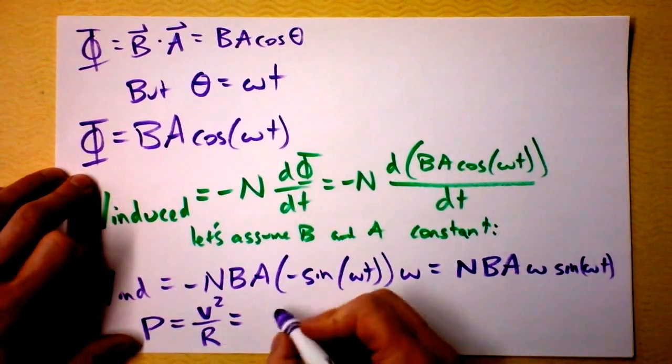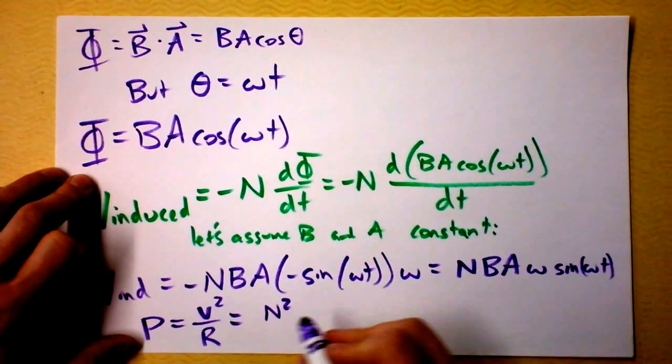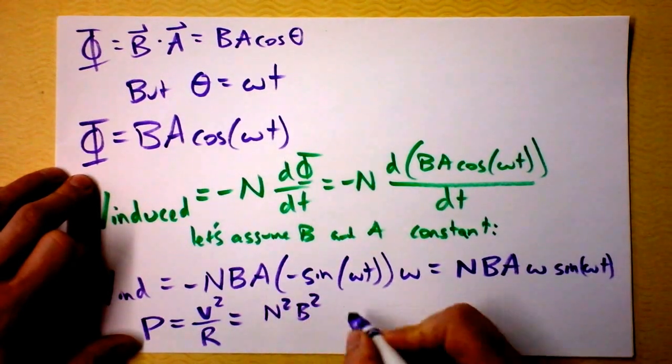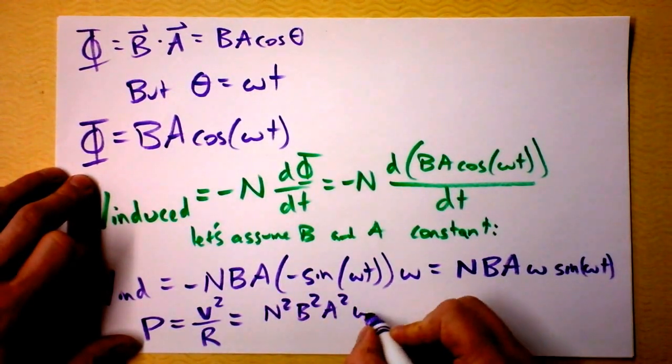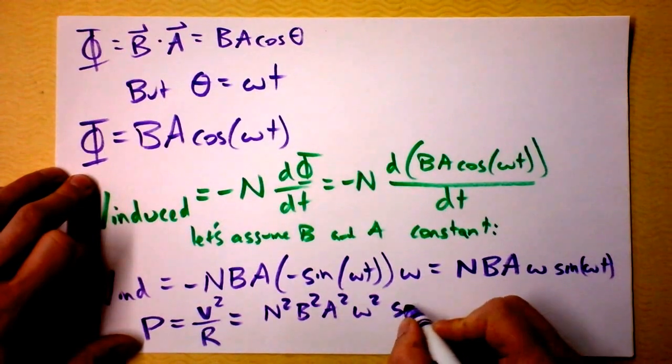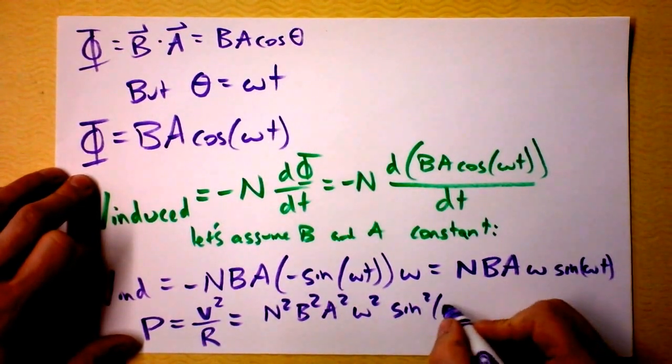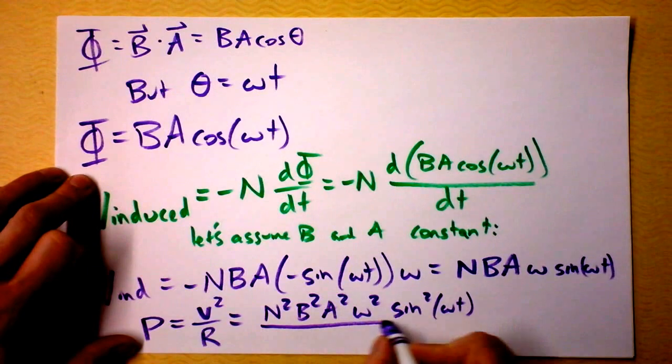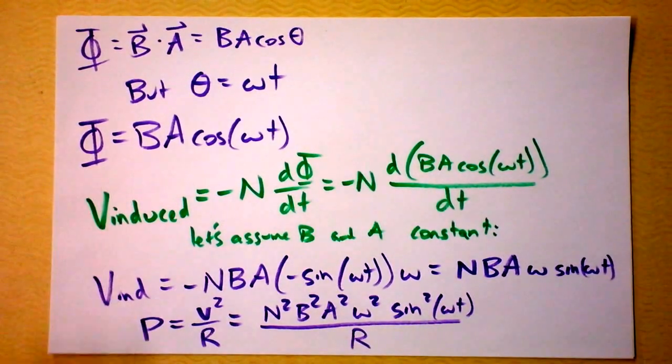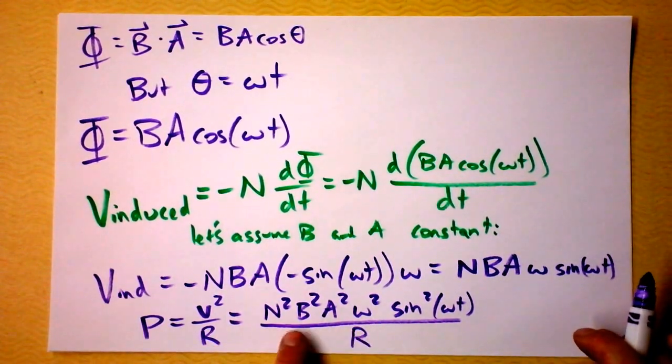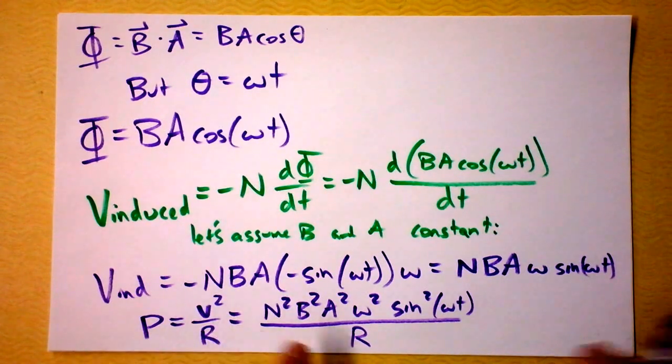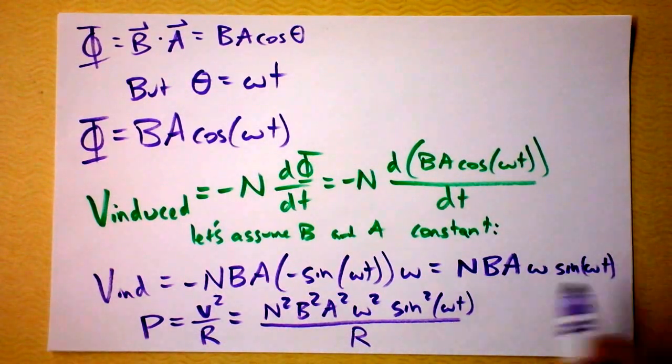In fact, the power that we're getting out of this sucker would be N squared times B squared times A squared times omega squared times sine squared of omega t divided by the resistance of our resistor. Have you ever seen the NBA squared? It's right there. I'm used to playing with spheres, but that is a square NBA.